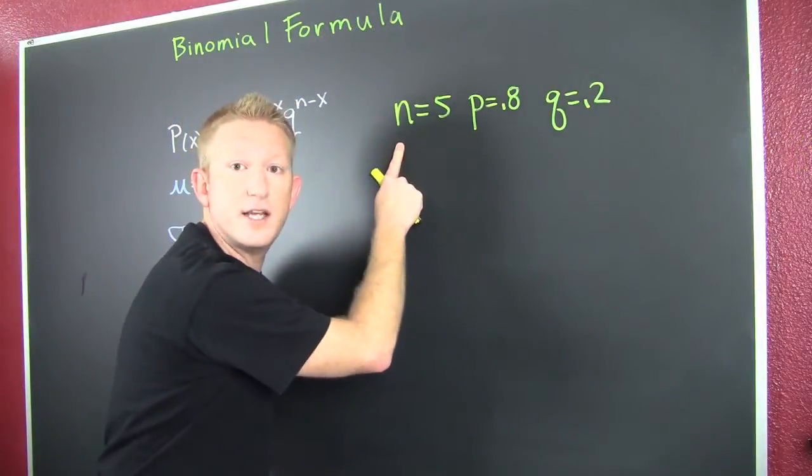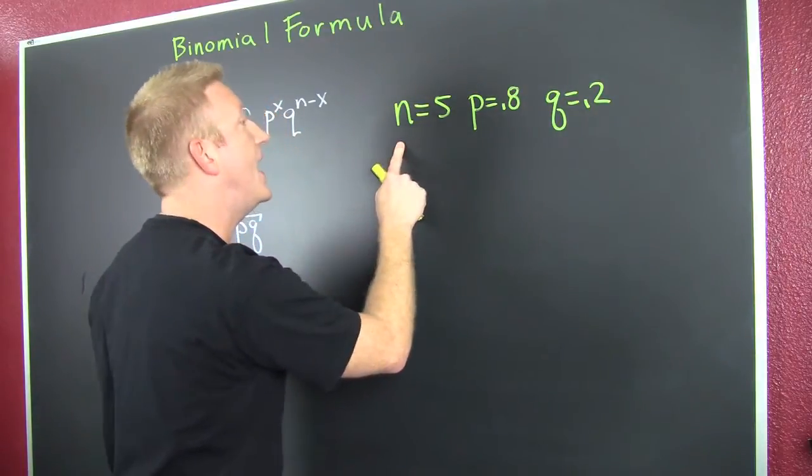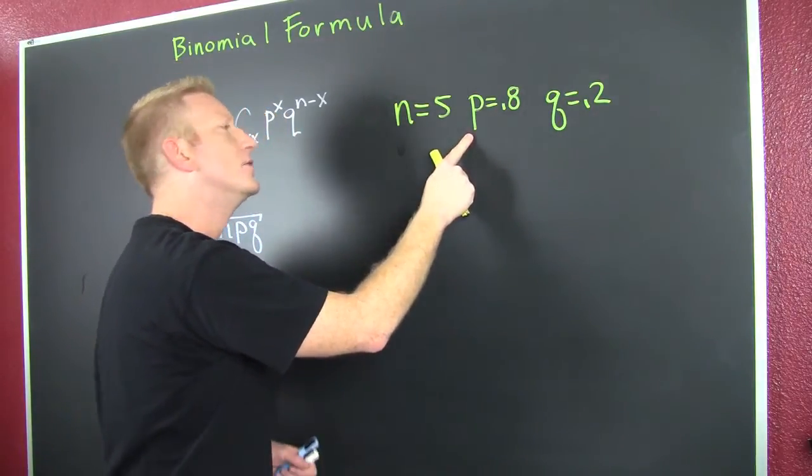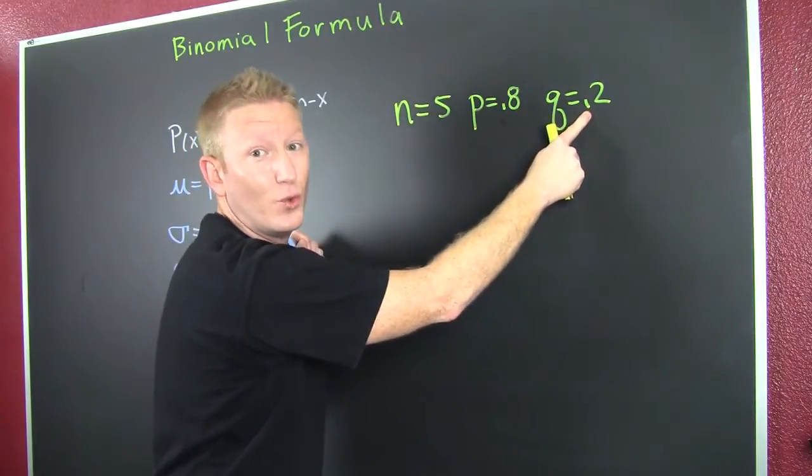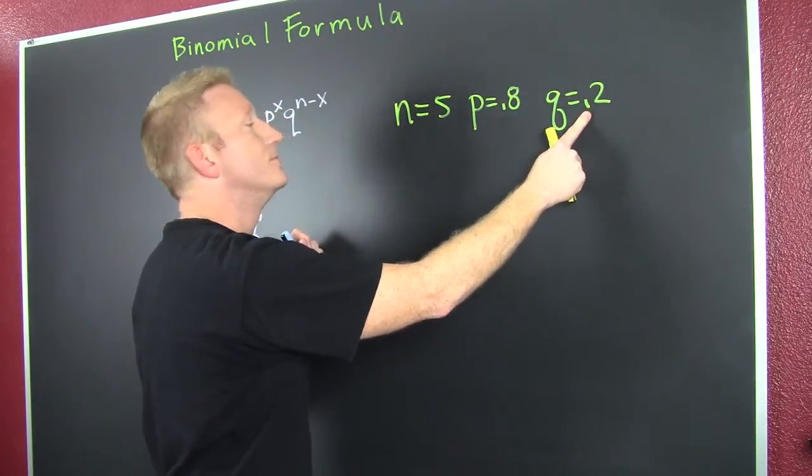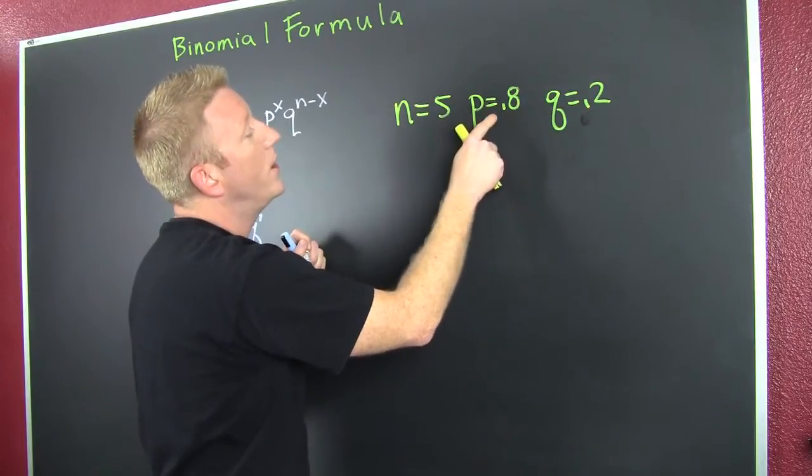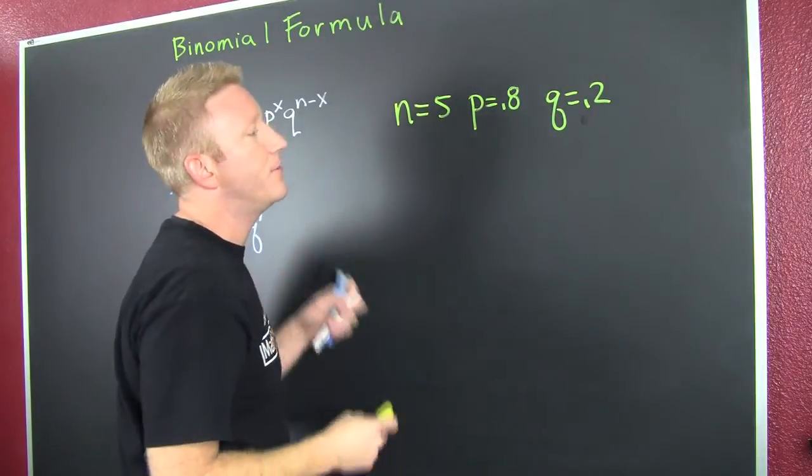Oh boy. So now I have my n being 5 and my p being 0.8. Great. So what do I add to 0.8 to get 1? 0.2. What could you have done? You could have taken 1 minus 0.8 and that's how you would get 0.2.